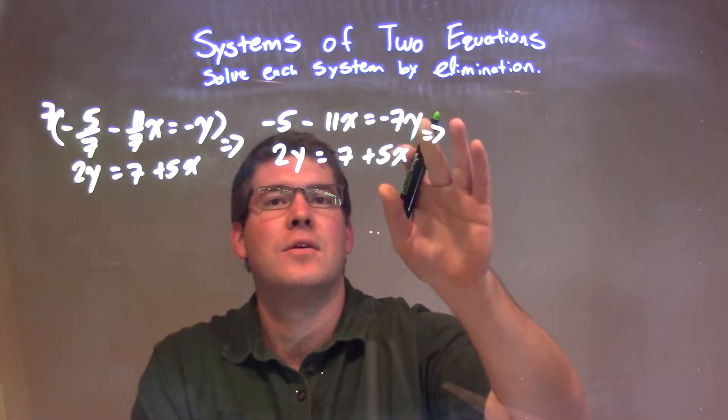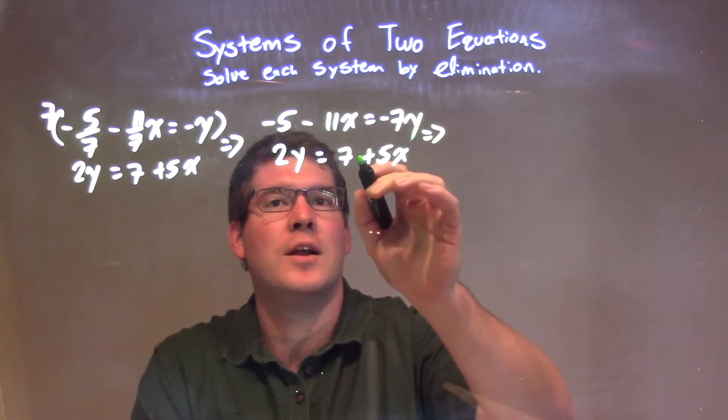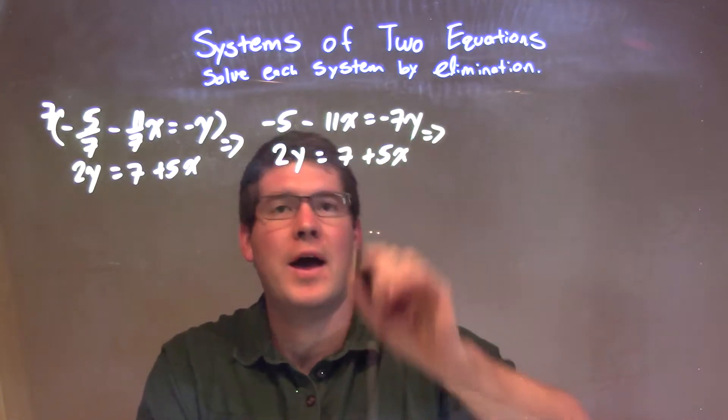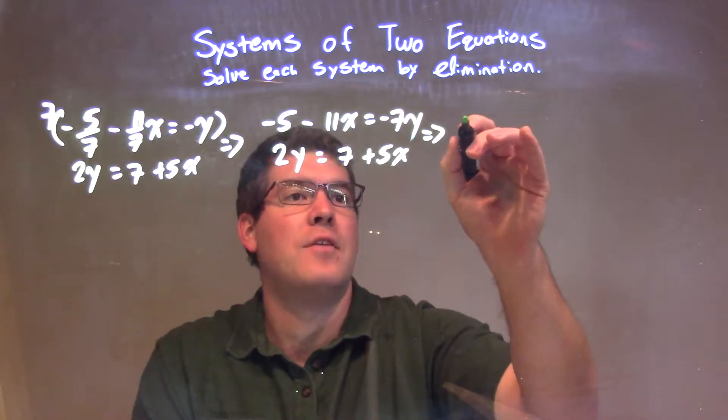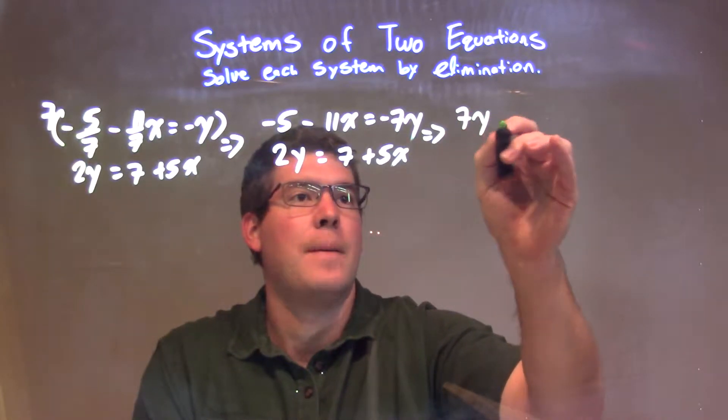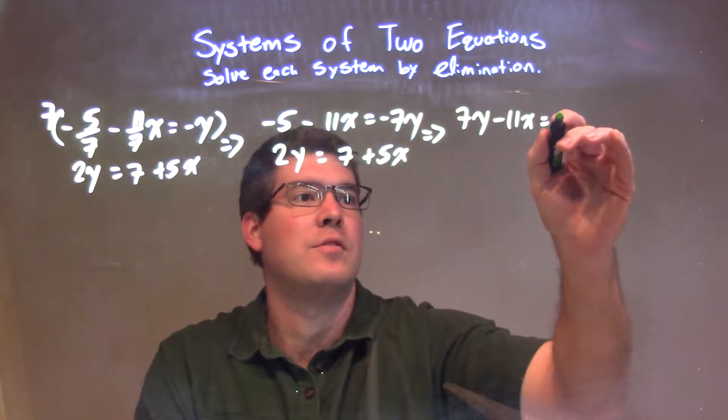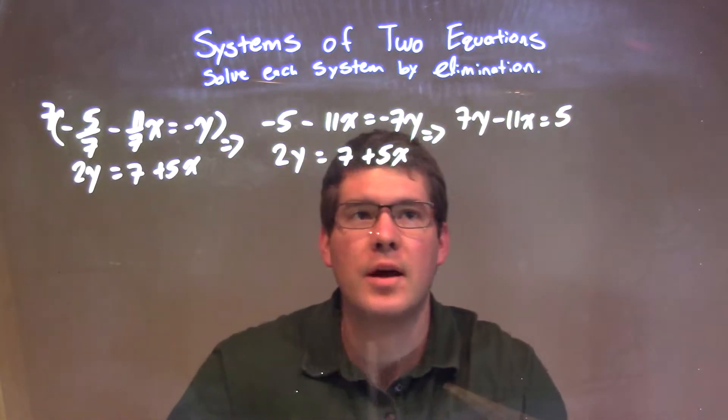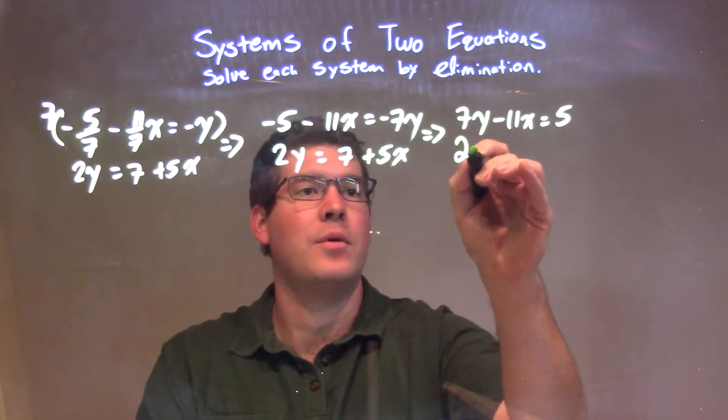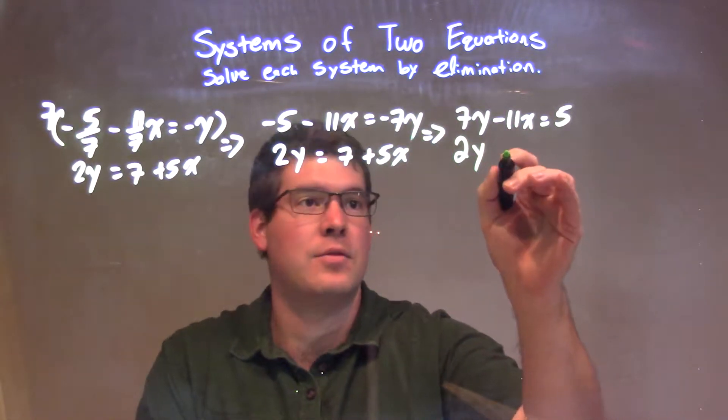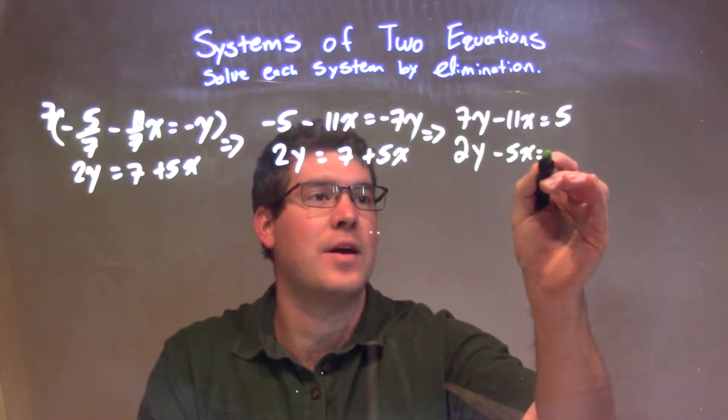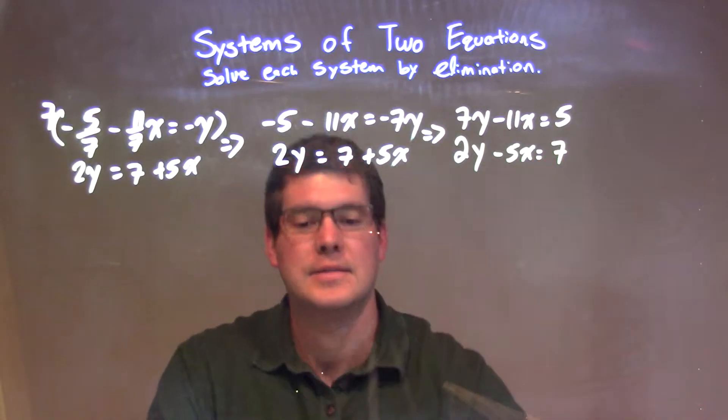Let's rewrite that. I'm going to add 7y to both sides and add 5 to both sides. So I have 7y minus 11x equals positive 5. The second equation, the 2y is down here, but I'll subtract 5x from both sides, minus 5x right there, and that's just equal to 7.